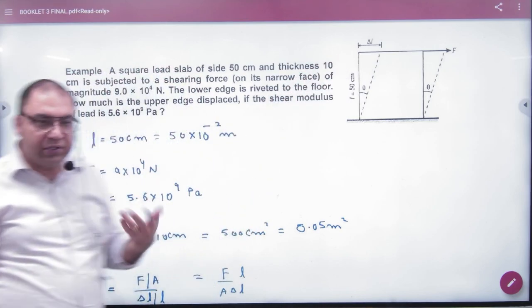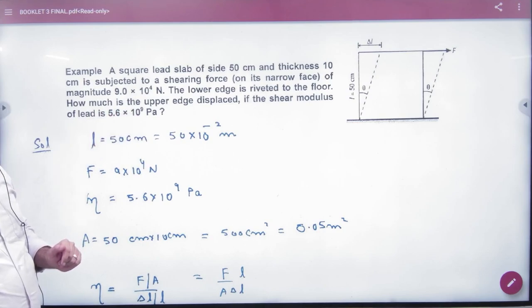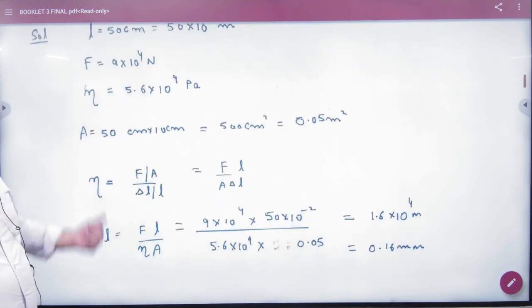So what will we do? Delta theta, delta L. If the shear modulus eta is given, F is given, L is given, and area can be calculated from the dimensions.